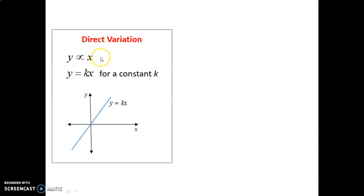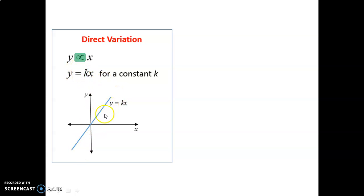So that's a linear direct variation model. This is the symbol we use for direct variation — it says y directly varies with variable x. And that symbol means the same as y equals some constant times x. It will always be a linear equation passing through 0, 0, with a y-intercept of 0. The k value, that slope, can always be found by dividing any y-coordinate by its x-coordinate.